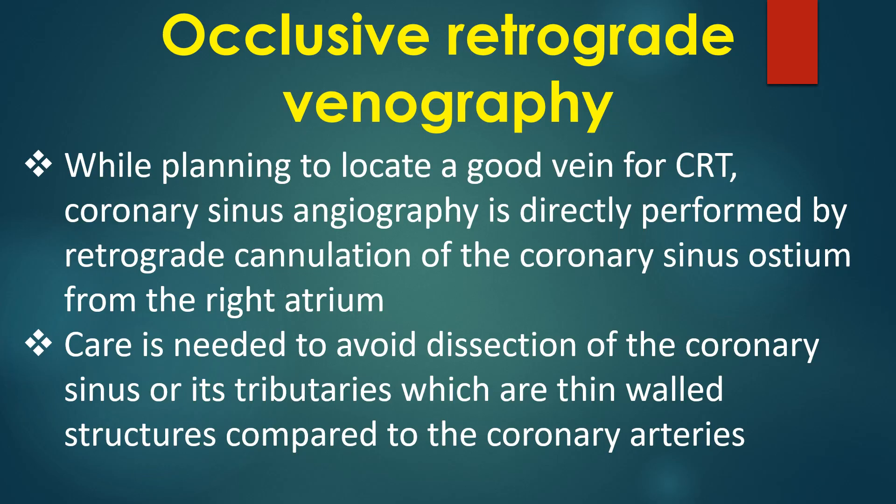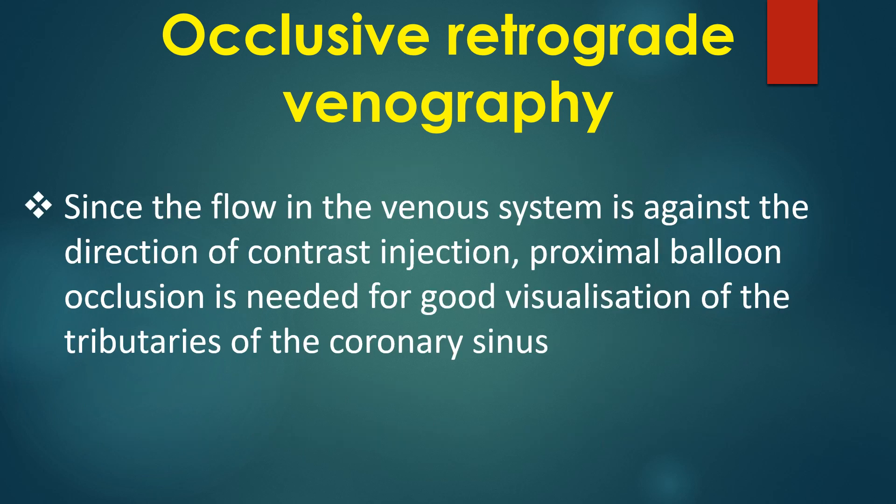While planning to locate a good vein for CRT, coronary sinus angiography is directly performed by retrograde cannulation of the coronary sinus ostium from the right atrium. Care is needed to avoid dissection of the coronary sinus or its tributaries, which are thin-walled structures compared to the coronary arteries. Since the flow in the venous system is against the direction of contrast injection, proximal balloon occlusion is needed for good visualisation of the tributaries of the coronary sinus.